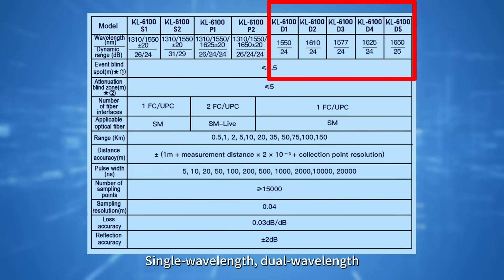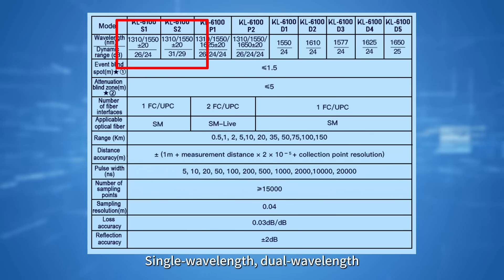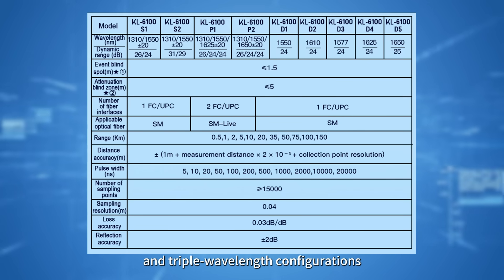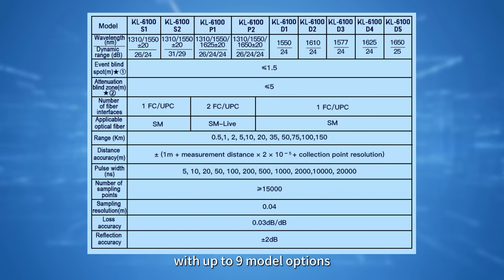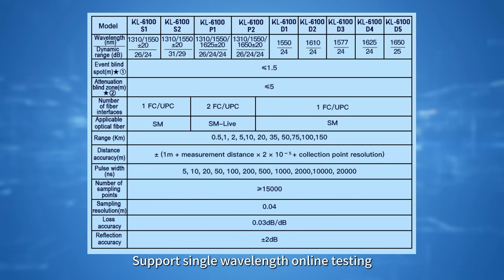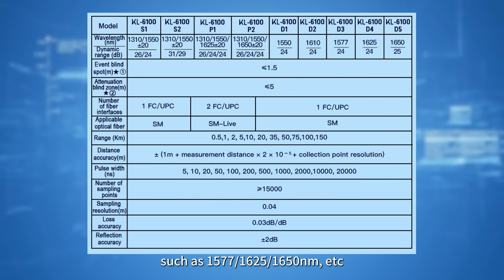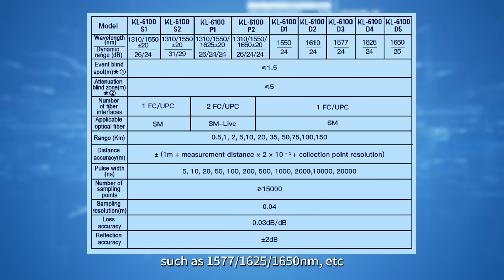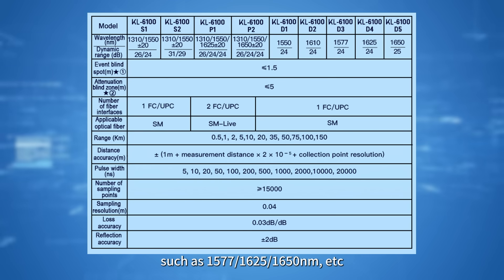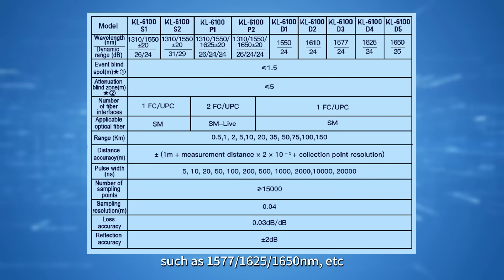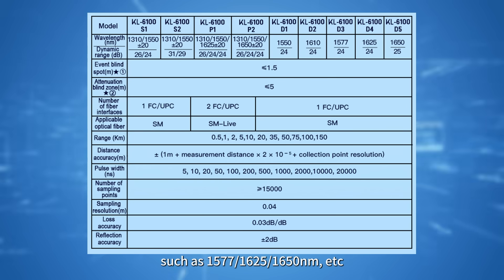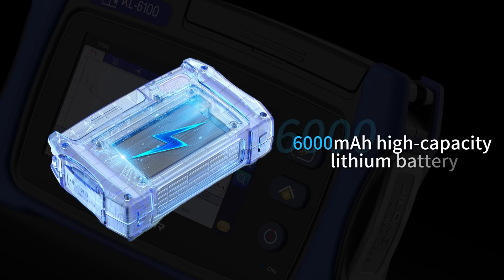Single wavelength, dual wavelength, and triple wavelength configurations with up to 9 model options. Supports single wavelength online testing, such as 1577, 1625, 1650 NM, etc. 6,000 mAh high-capacity lithium battery.